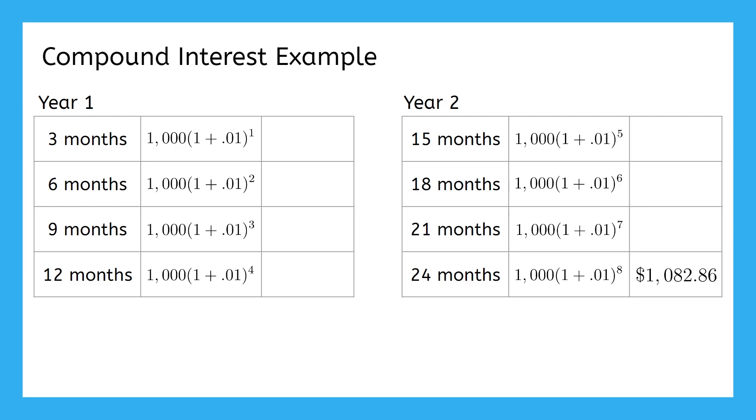After three months, it will compound for the first time. So we can just use an exponent of one to find that it will now have $1,010. After another three months, it compounds a second time. So the exponent is two. And now the account is up to $1,020.10. Why don't you pause the video now and try filling in the remaining amounts in your notes?